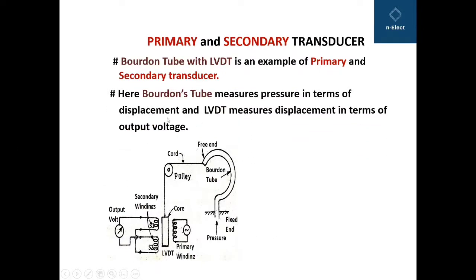The Bourdon tube measures pressure in terms of displacement. When pressure is applied to its fixed end, the free end of the Bourdon tube moves. The displacement of the free end takes place in this direction, and that displacement is a measure of pressure. So pressure is measured in terms of the displacement.